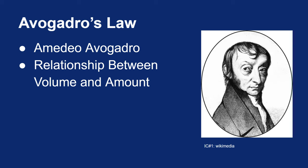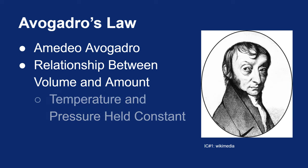Avogadro studied the relationship between the volume of a gas and its amount. So just like Boyle and Charles, he was comparing one measurement of gas to another. And if you're measuring volume and amount, you must keep the other measurements constant. So in Avogadro's case, he had to keep his temperature and his pressure constant.